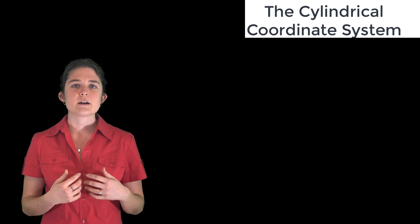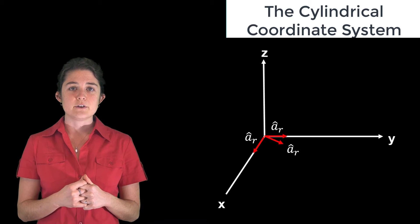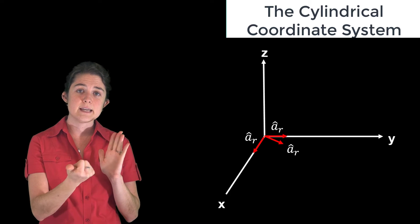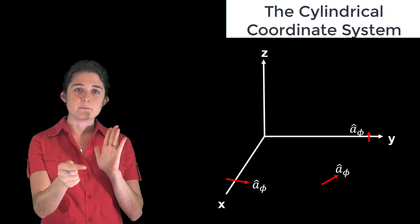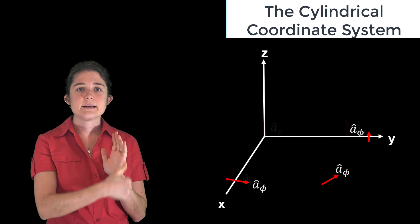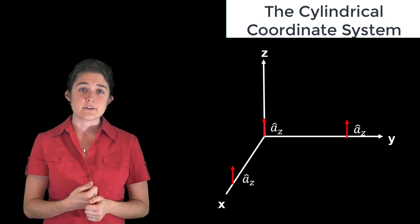First, let's talk about the cylindrical coordinate system. This system is defined using the unit vectors AR, which points in the radial direction outward from the z-axis, AFI, which points in the counterclockwise direction around the z-axis, and AZ, which points in the z-direction. These directions are specified graphically here.